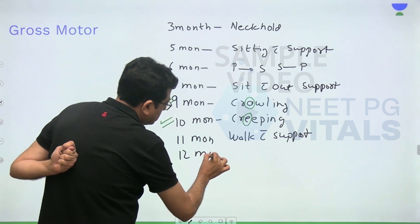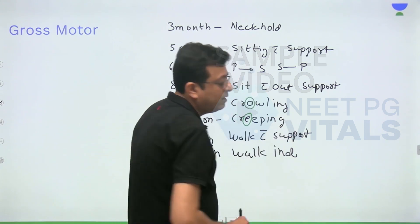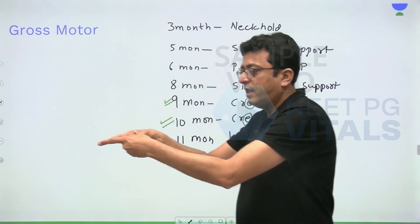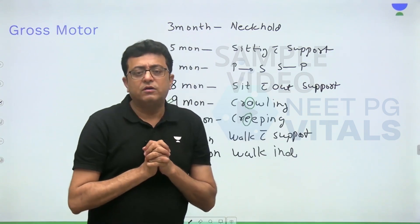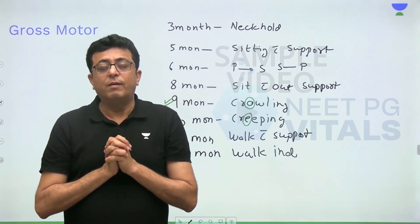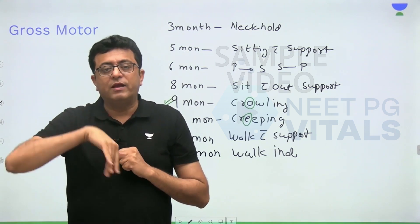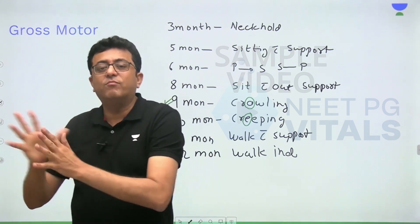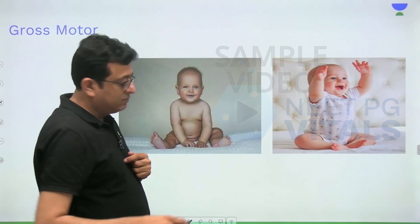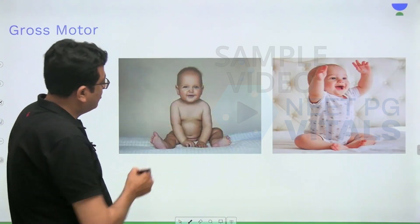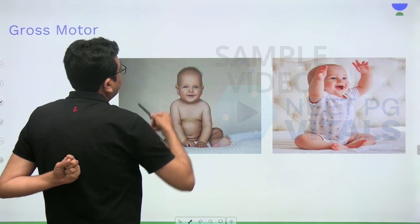At eleven months the child can walk with support — you can hold both hands and the child will walk. At twelve months, the child walks independently. To summarize: three months neck holding, five months sitting with support, six months prone to supine and supine to prone, eight months sitting without support, nine months crawling, ten months creeping, eleven months walk with support, twelve months walk independently.